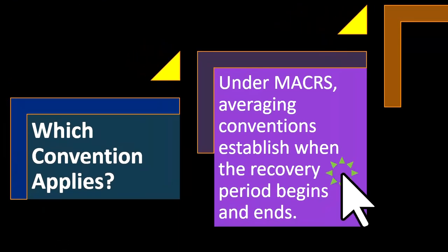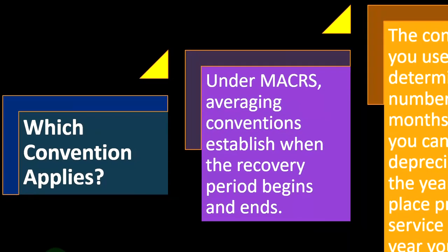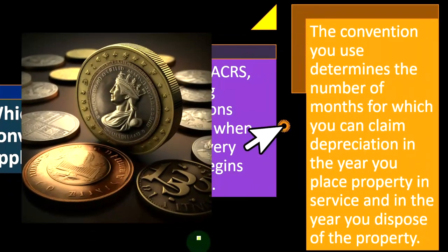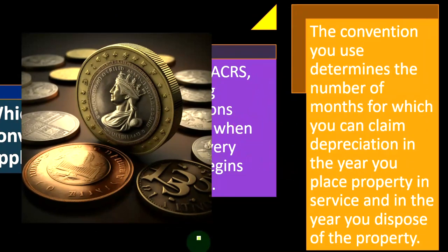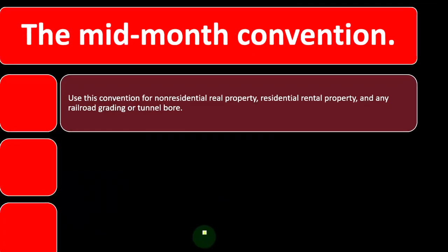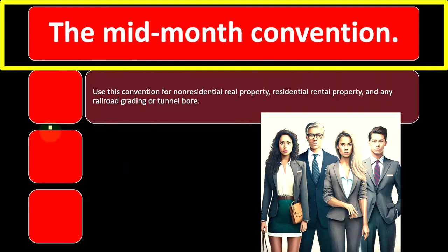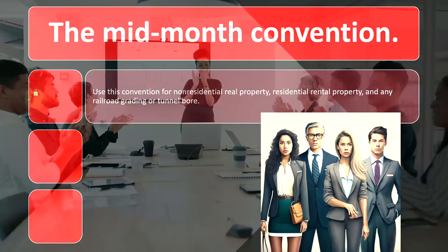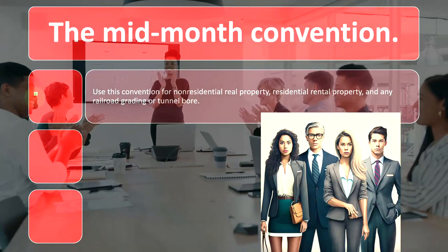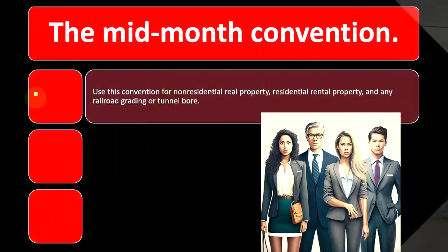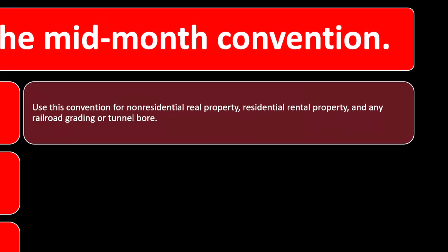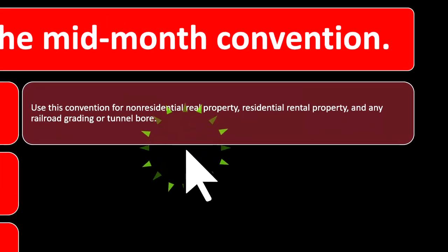Under MACRS, average conventions establish when the recovery period begins and ends. The convention you use determines the number of months for which you can claim depreciation in the year you place property in service and in the year you dispose of it. The mid-month convention applies to non-residential real property, residential rental property, and any railroad grading or tunnel bore.